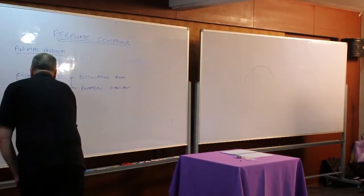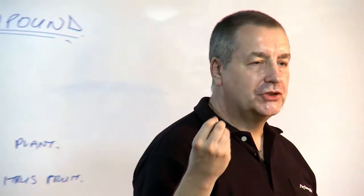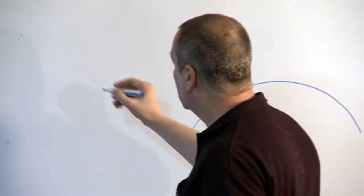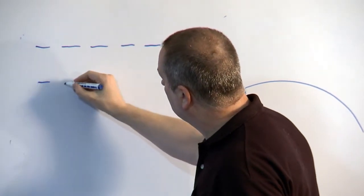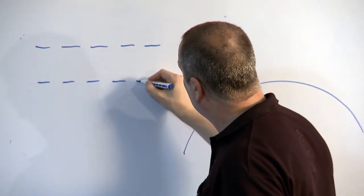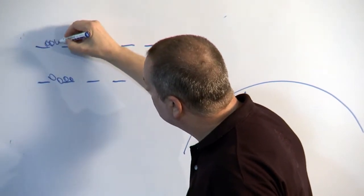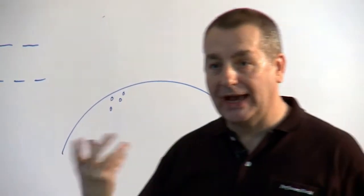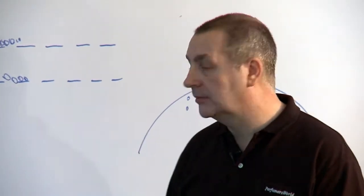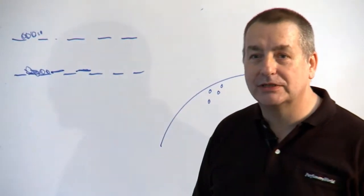Next group that I look at are extracts. If you put jasmine flowers into a still, in the still you'll have trays with holes in. If you put jasmine flowers in there, what happens is one of the main components of a jasmine petal is wax. The steam melts the wax and then blocks the holes so you get no distillation.